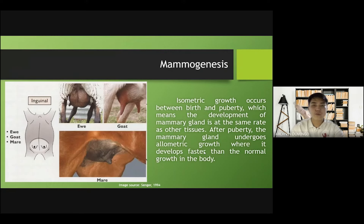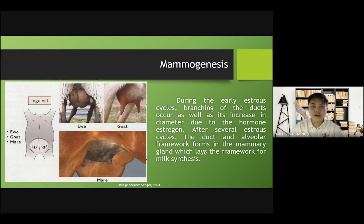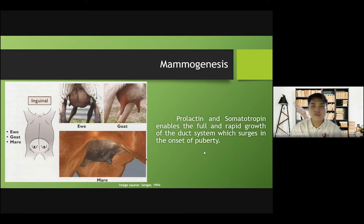Isometric growth occurs between birth and puberty, which means the development of the mammary gland is at the same rate as other tissues. After puberty, the mammary gland undergoes allometric growth, where it develops faster than the normal growth of the body. During the early estrous cycle, branching of the ducts occurs as well as an increase in diameter due to the hormone estrogen. After several estrous cycles, the duct and alveolar framework forms in the mammary gland, which lays the framework for milk synthesis. Prolactin and somatotropin enable the full and rapid growth of the duct system, which surges at the onset of puberty.